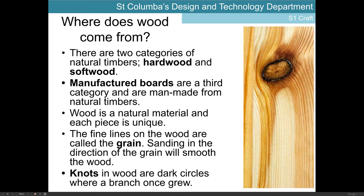To recap: we have three categories of timber — two are natural timbers, hardwoods and softwoods, which we get straight from trees. Manufactured boards are a third category, man-made from the waste materials of natural timbers. Wood is a natural and unique material. The lines we see on natural pieces of timber are the grain, and the dark circles are knots — quite hard, difficult to work with, and showing where a branch once grew. There will be a link to the department website below this video, as well as links to the practical woodwork and design and manufacture pages if you want to go over other theory areas.